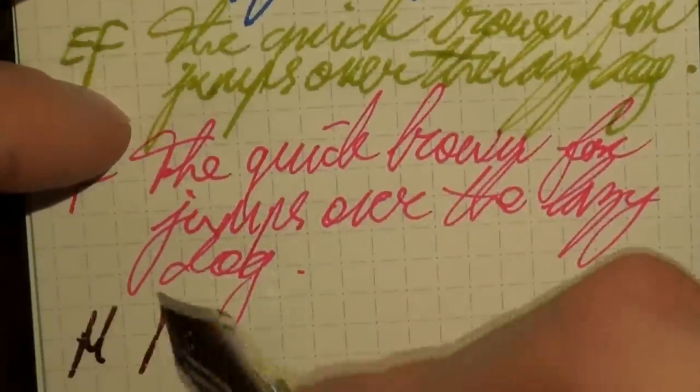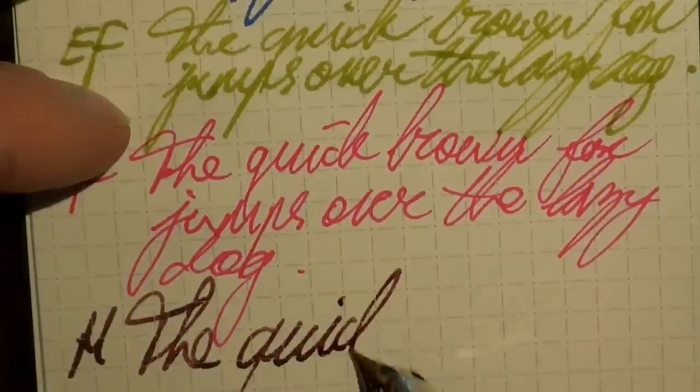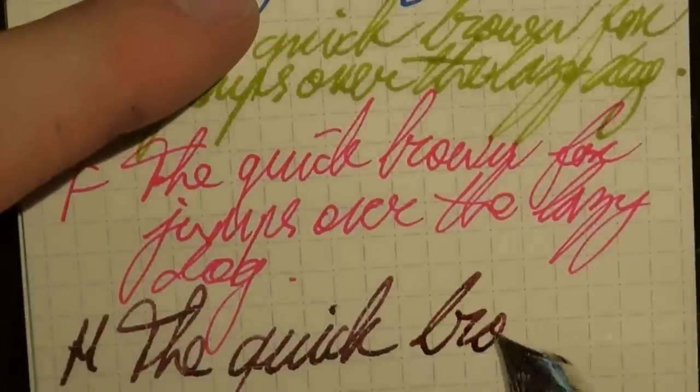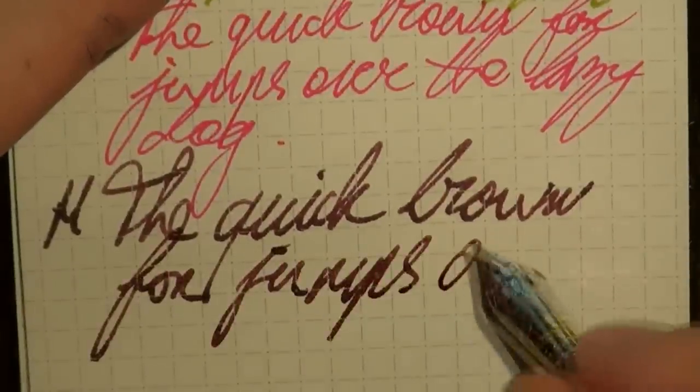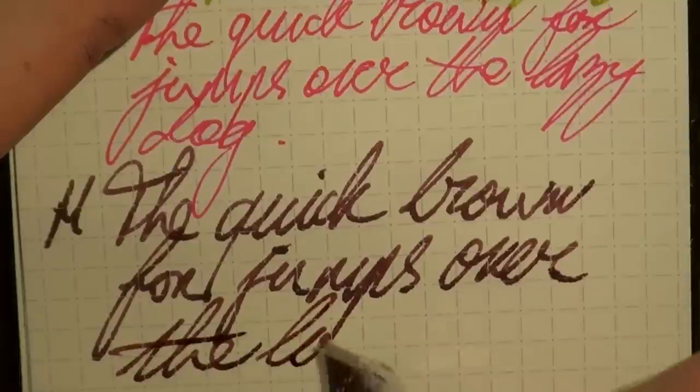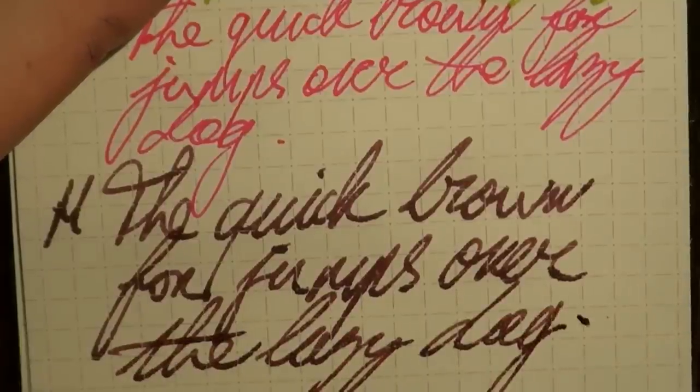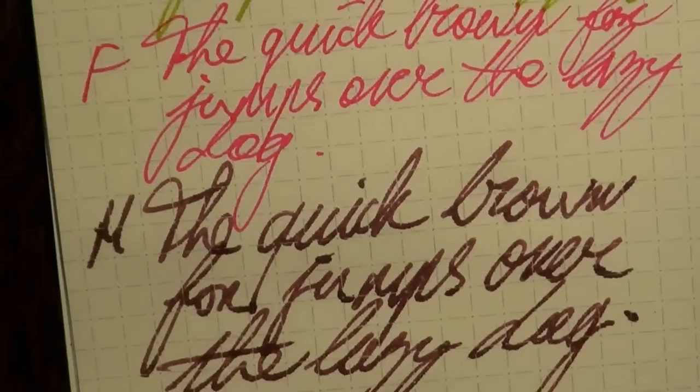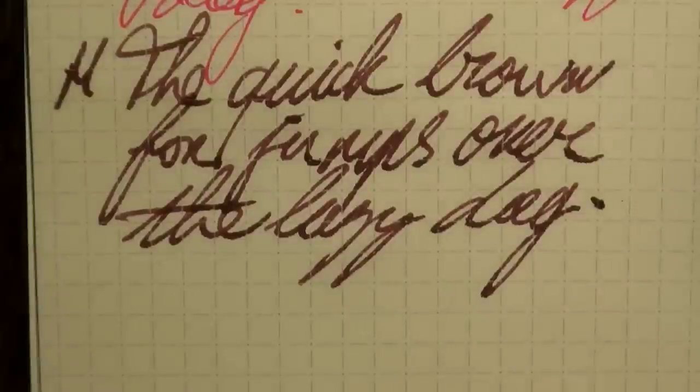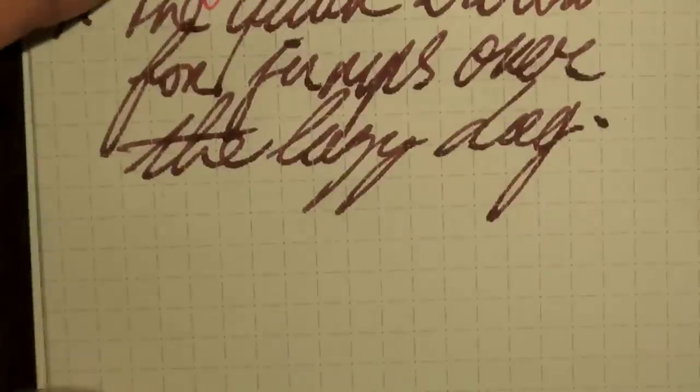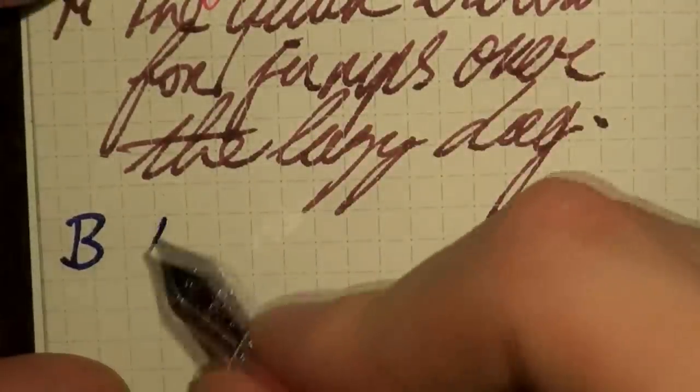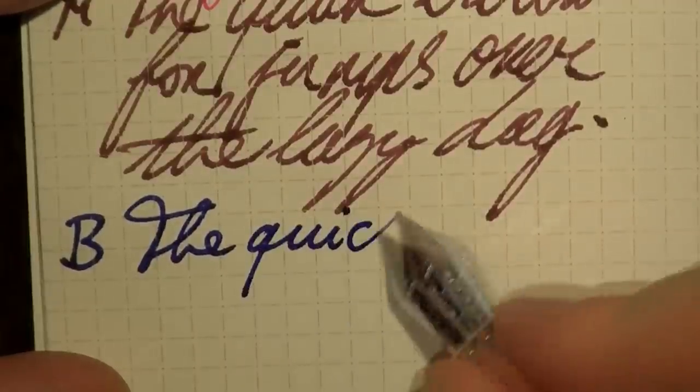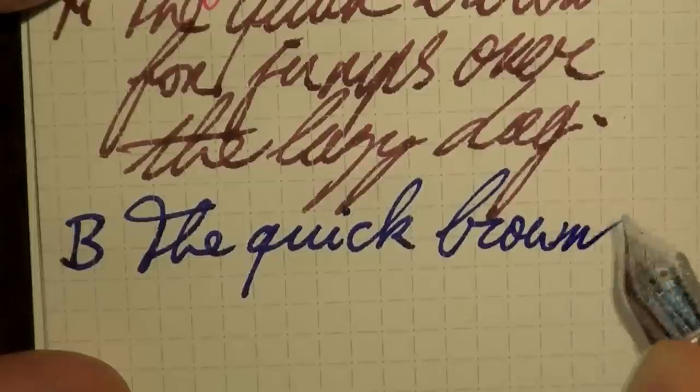Then we have a medium in a Visconti Homo Sapiens Elements. Again, super fast drying time. I'm pretty sure this is Diamine Merlot. So there you have it. Again, I don't really see any real feathering.